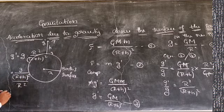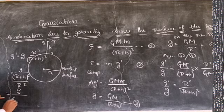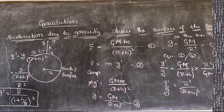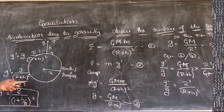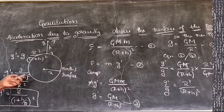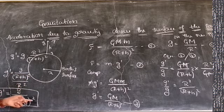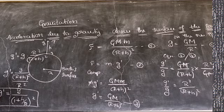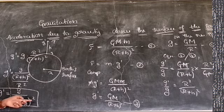We can simplify this equation. g-dash equals g into r² divided by (r+h)² . Rewriting: (r+h)² divided by r² gives (1 + h/r)². So the equation becomes g-dash = g divided by (1 + h/r) whole square. This is the simplified final expression for acceleration due to gravity above the surface of the Earth.